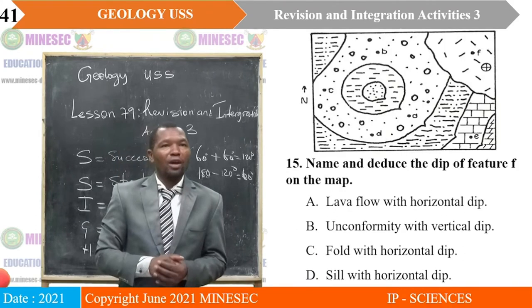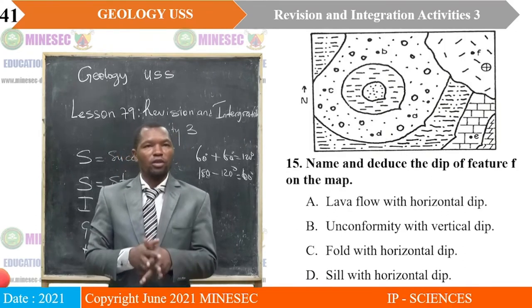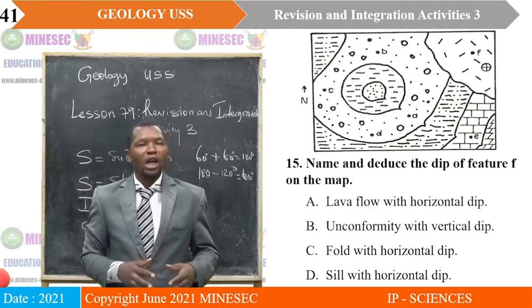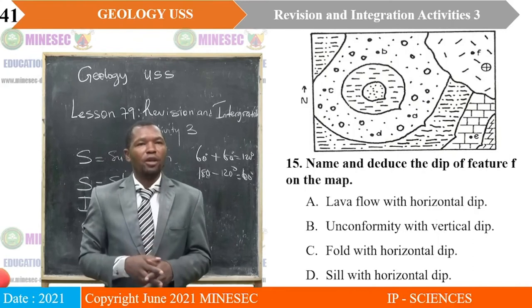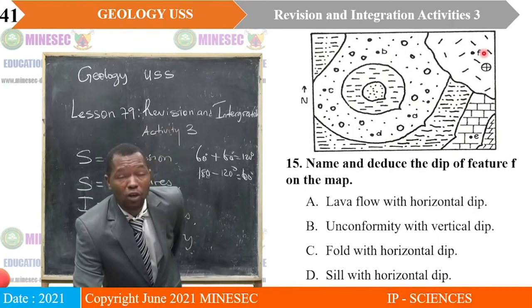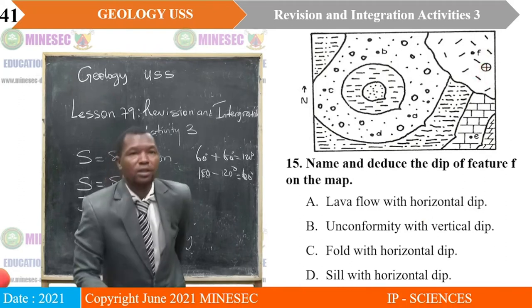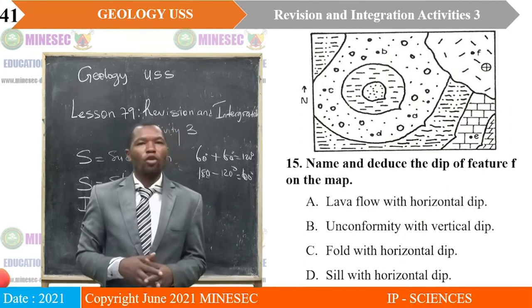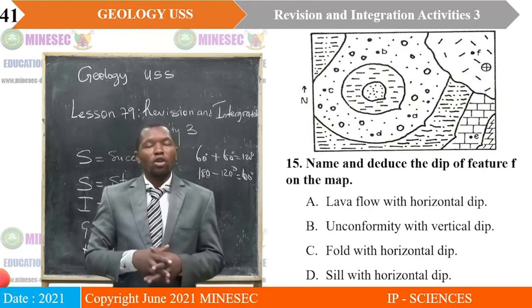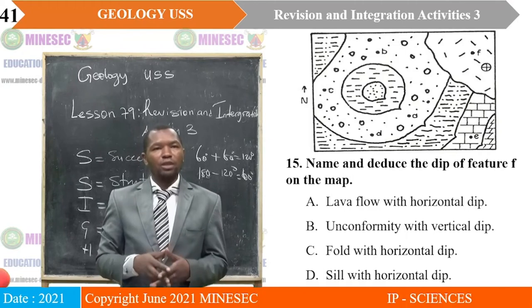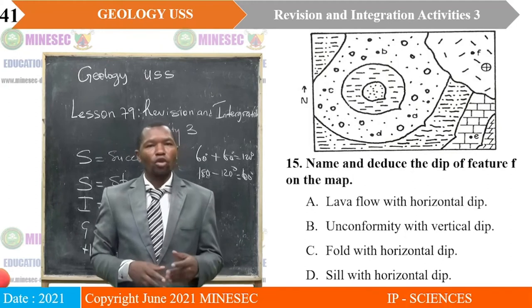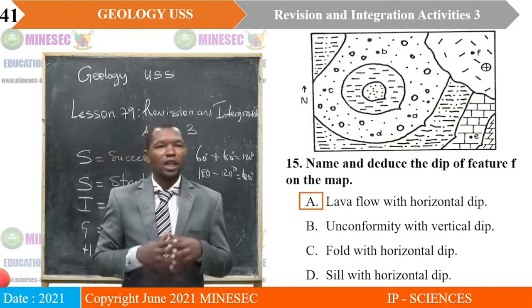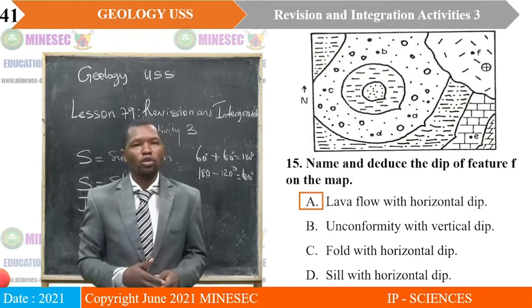Question 15 concerns this map. Name and deduce the dip of feature F on the map. Feature F has a small circle with a cross inside. A — lava flow, horizontal dip; B — unconformity, vertical dip; C — fold, horizontal dip; D — sill, horizontal dip. The correct answer is A — lava flow with horizontal dip.